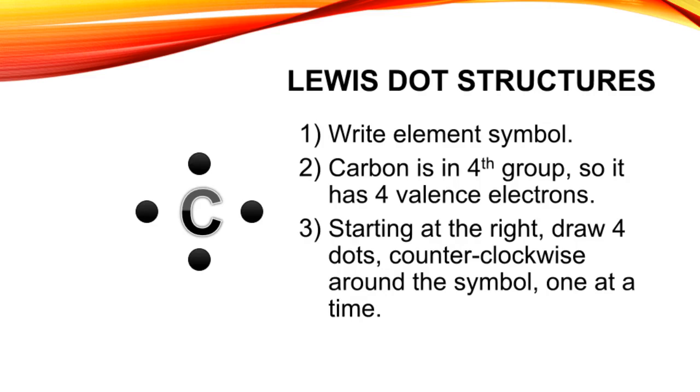Example: Carbon, with a symbol of capital C, has 4 valence electrons, so the electron dot structure for carbon looks like this - carbon surrounded with 4 dots.